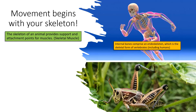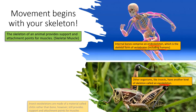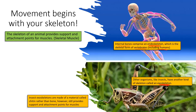Internal bones comprise an endoskeleton - that is a skeleton that is inside the body. Those would be internal bones, which is the skeletal form of vertebrates, organisms that have a backbone. Humans have a backbone, so we are part of the category of organisms called vertebrates. Insects and other organisms that lack an endoskeleton actually have an exoskeleton, which is a skeleton on the outside of the body. Insect exoskeletons are made of a material called chitin, which is a structural polysaccharide found in certain organisms like insects.